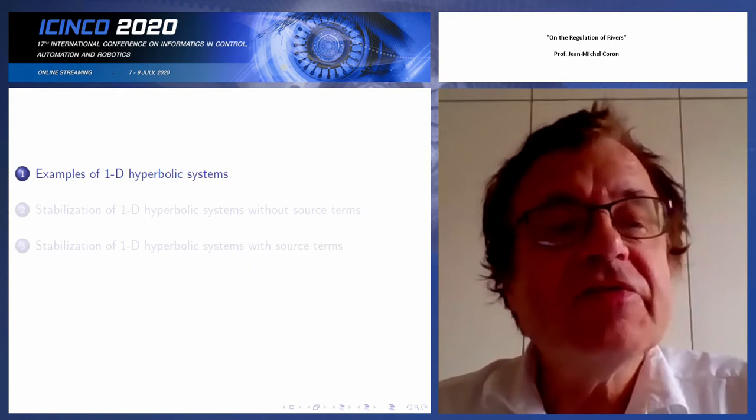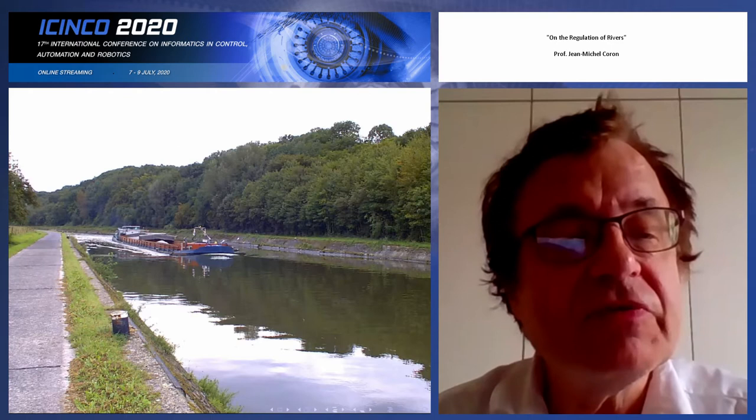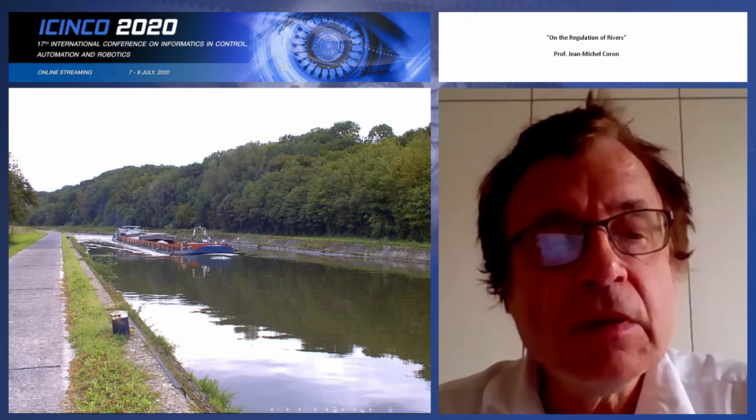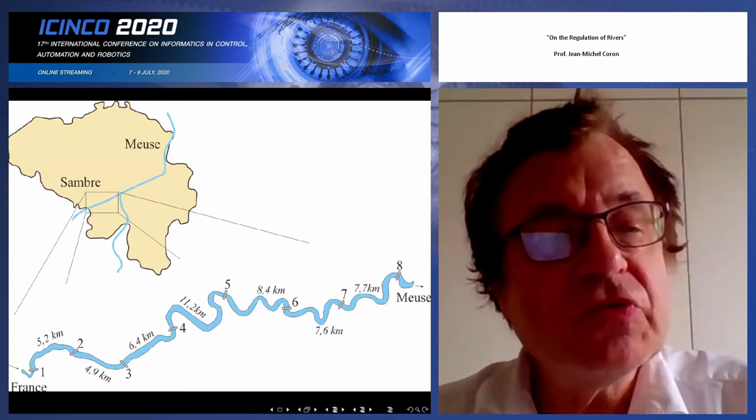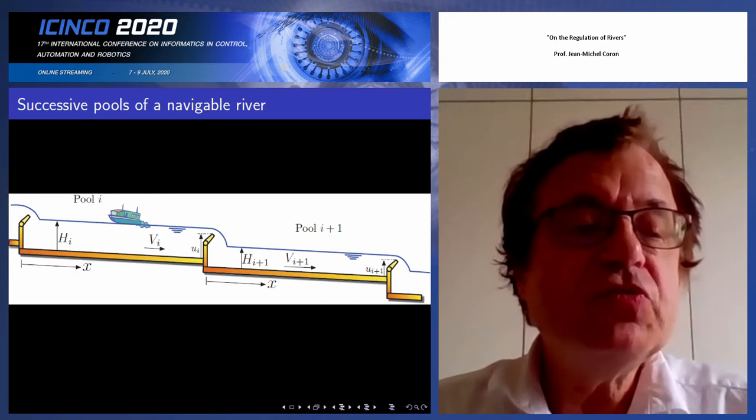There are really plenty of examples of hyperbolic systems. The main application I am going to present today is about the regulation of rivers. Here is a picture of a river in Belgium. We can see a map, and below the map there are numbers one, two, three, four, five — these are the gates, and this is the place where we are going to use the controller. The part between two gates is called the pool.